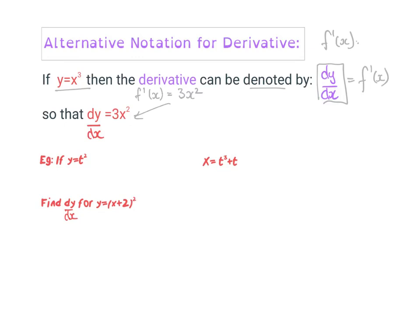Looking at a few examples. If I want to find the derivative of y with respect to t, it would be dy/dt because it's not talking about x. The derivative of that would be 2t to the power of 1. For x as a function of t, it would be dx/dt. The derivative of that would be 3t squared plus 1. Remember that's because 1 times 1 times t reduces the power to 0, and anything to the power of 0 is 1.